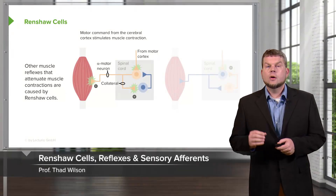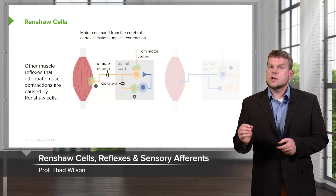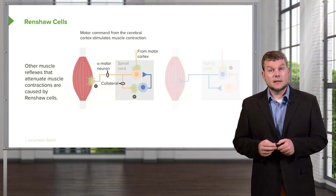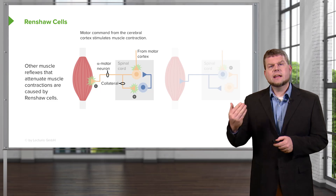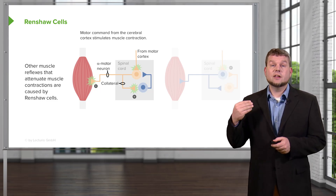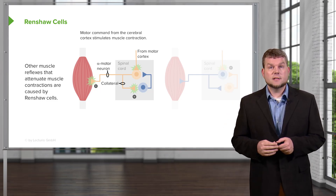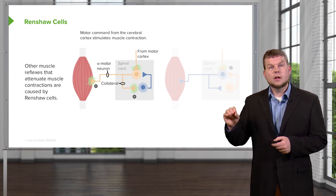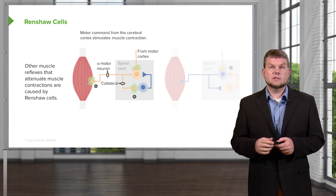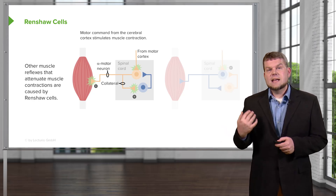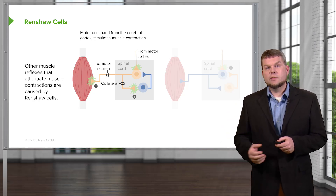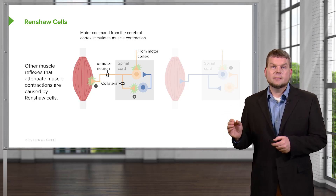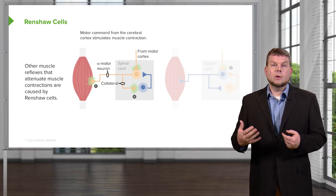Renshaw cells aren't involved with an afferent-efferent reflex, but instead they are engaged when you have a contraction through alpha motor neurons. This is information being sent down the spinal cord to the alpha motor neuron to get a contraction. At the same time as getting the contraction from the alpha motor neuron, there is feedback that is then stimulating the Renshaw cell.